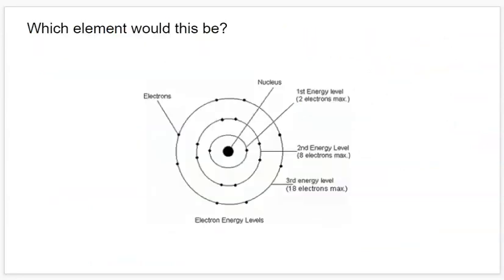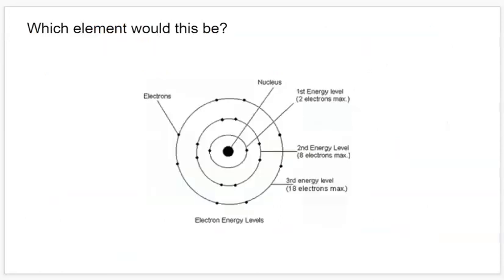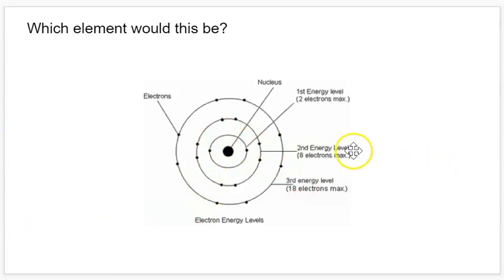Knowing that the first shell can hold two, the second can hold eight, and the third can hold 18, let's figure out what this element is. We have three energy shells. Also, you'll note that the number of shells that are occupied with electrons also corresponds to the row that the element is in on the periodic table.